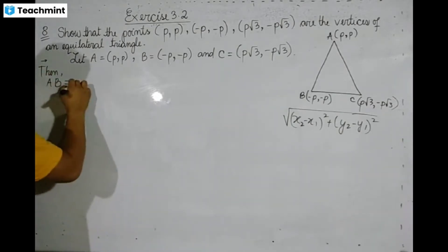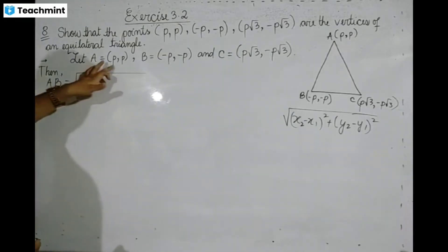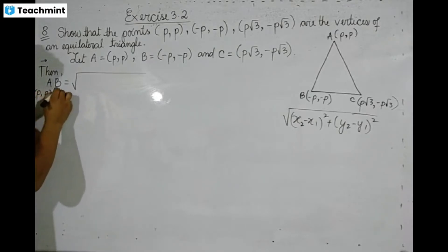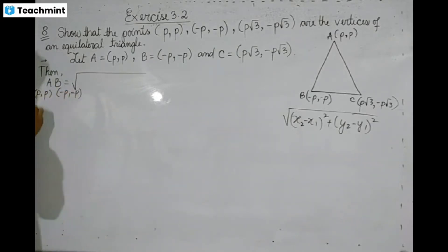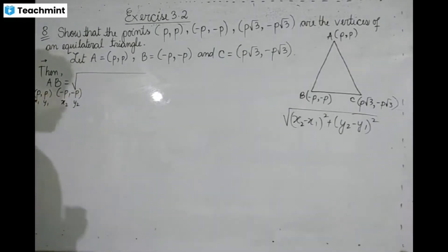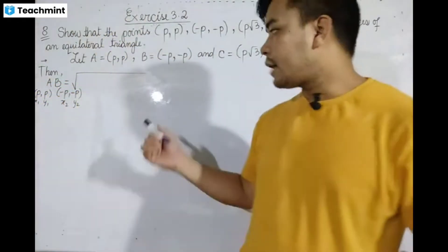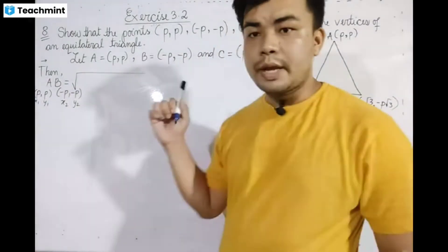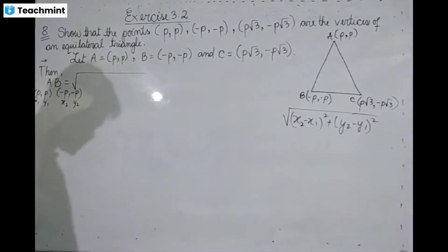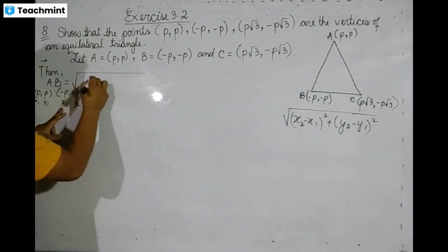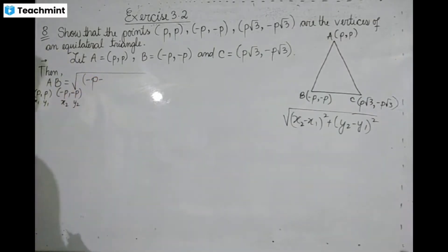AB: take a copy of this. The coordinates list is (p, p) and (-p, -p). So x1 is p, y1 is p, x2 is -p, y2 is -p. Then x2 minus x1 will appear: x2 minus x1 equals -p minus p.